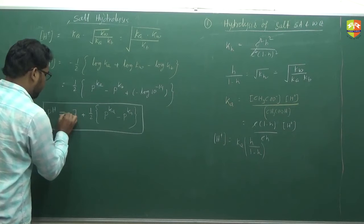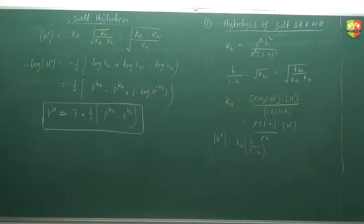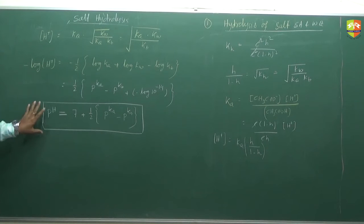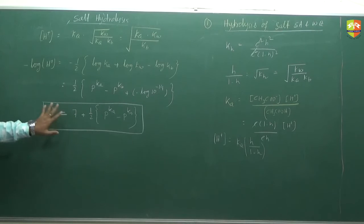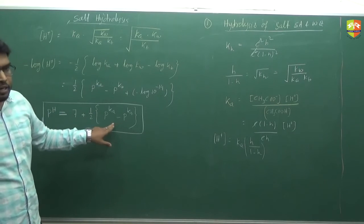So this doesn't depend on concentration C — it is independent of concentration. It depends upon both the acid and the base, specifically which one is stronger. From this expression we cannot say pH is greater than 7, less than 7, or equal to 7 without knowing the values of pKa and pKb.